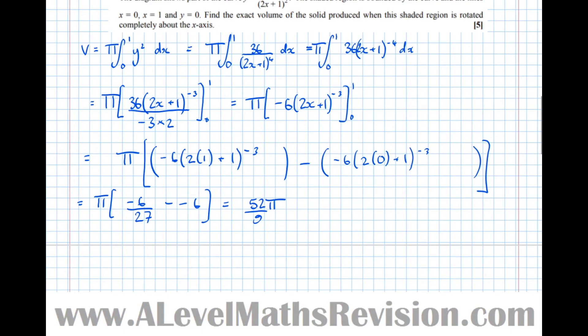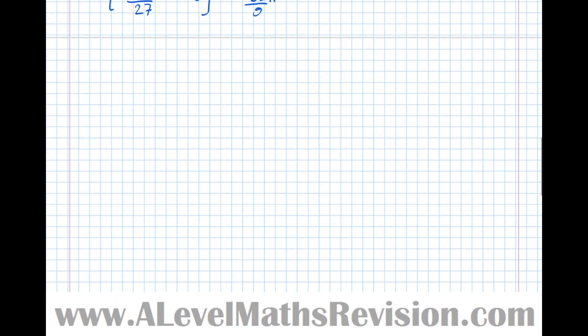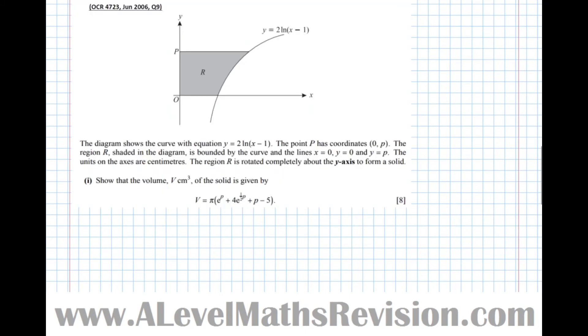Now let's have a look at a solid form when rotating around the y-axis, and it has a very, very similar formula. So let's have a look at another question. This question says the diagram shows that the curve with equation y equals 2 log x minus 1. The point p has coordinates 0p. So let's label that on the diagram. That has coordinates 0p. The region R, shaded in the diagram, is bounded by the curve, the lines x equals 0, y equals 0, and y equals p. The units on the axes are centimeters. The region R is rotated completely around the y-axis to form a solid.